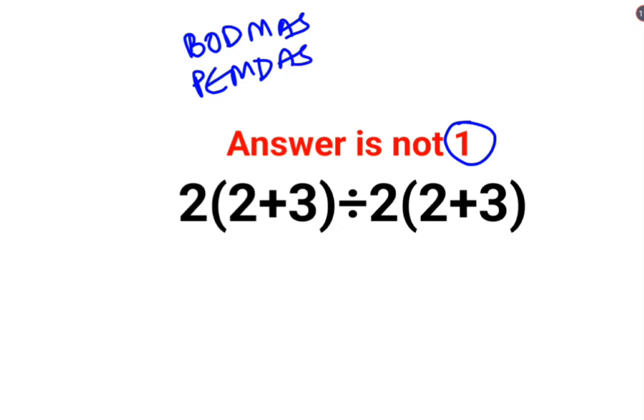So first let's just do the brackets. So we have 2. There is no sign between 2 and the parenthesis means it is multiplication. 2 plus 3 is 5. Divided by 2 multiplied by 2 plus 3 is again 5.